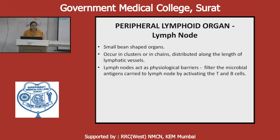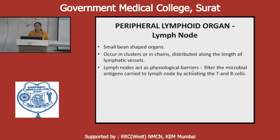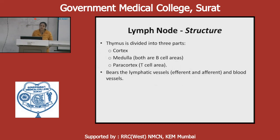Now come the peripheral lymphoid organs. The first is the lymph node — small bean-shaped organs present throughout the course of lymphatics, distributed all over the body, acting as physiological barriers. They filter microbial antigens carried to lymph nodes by activating T and B cells. The lymph node is divided into three parts: cortex, medulla, and pericortical area. The cortex and medulla are B cell areas, while the pericortical area is mainly a T cell area. Lymph nodes bear afferent and efferent lymphatic vessels and blood vessels.